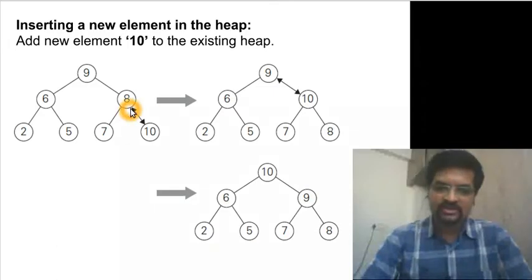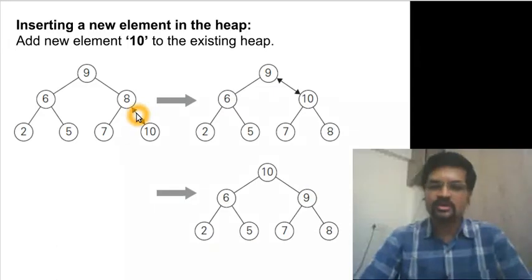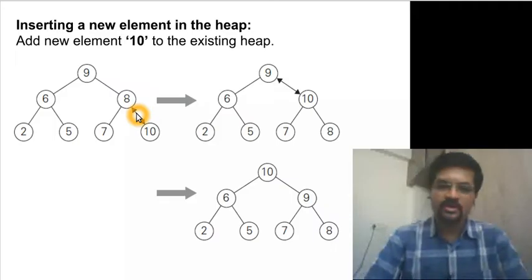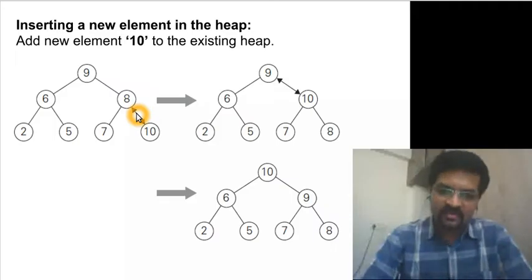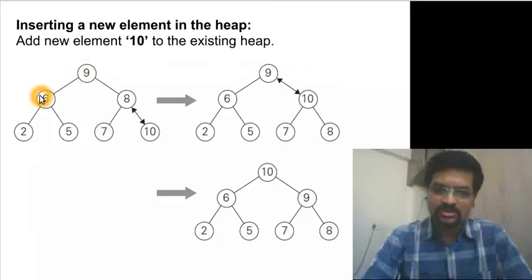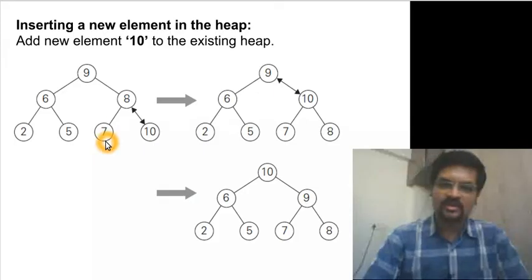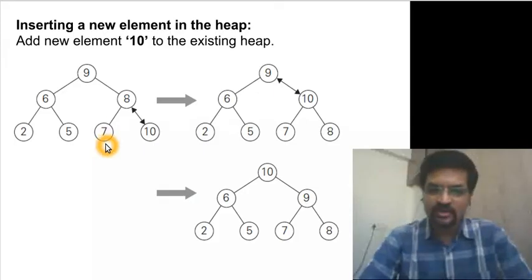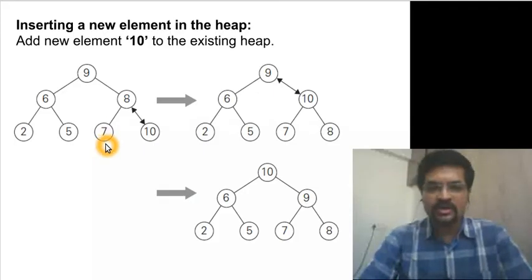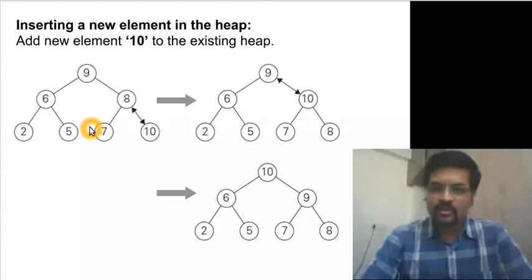Before that, I would like to introduce a procedure for how to insert a new key into an existing heap. Suppose we have a heap of six nodes — nodes 1 through 6 — represented in an array with six locations. It is already a valid heap.